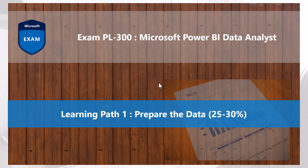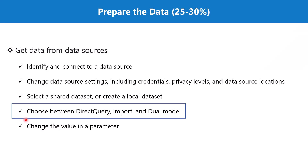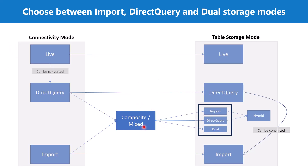Welcome back to the PL-300 exam preparation series. In this video we are going to continue our discussion on the topic 'Choose between Direct Query, Import, and Dual mode,' which is part of the section 'Get data from data sources.' In the previous part we had a brief look at a diagram covering connectivity modes and table storage modes, and we saw that there are three table storage mode options.